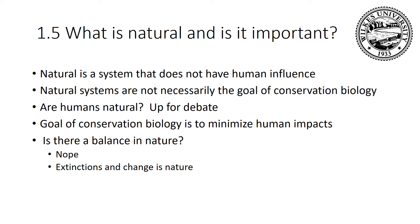Another thing to consider in conservation biology is what is natural. When people say a natural system, what does it mean? I don't want to get bogged down in definitions, but a natural system is one that does not have human influence. Humans are natural — we are not synthetic — but the things we create tend not to be natural. Plastics, even though created by an organism, are not natural. Natural systems are not necessarily the goal of conservation biology.